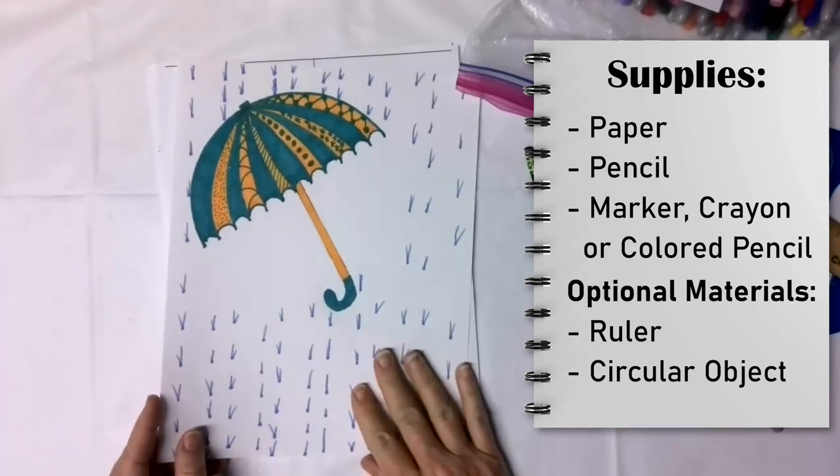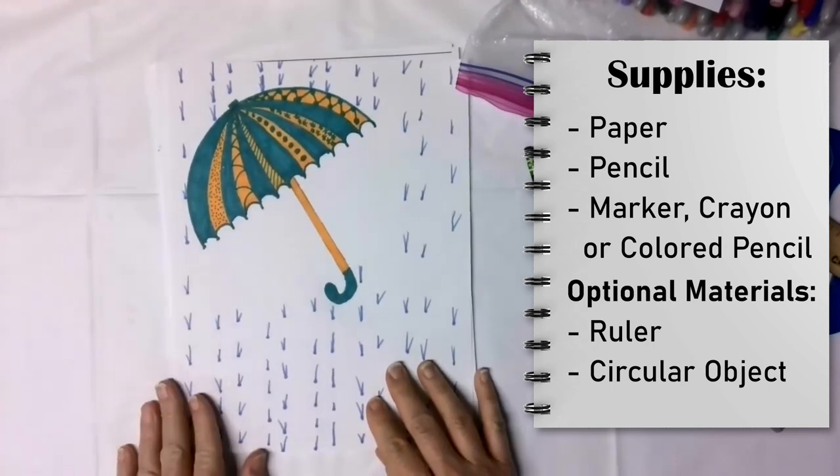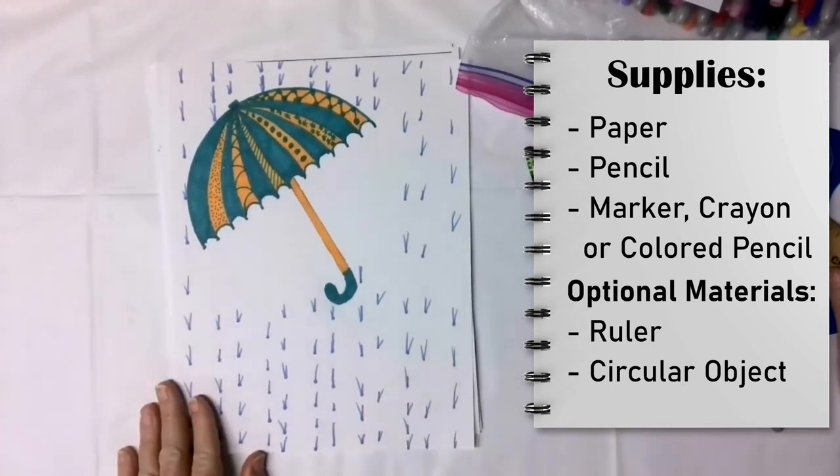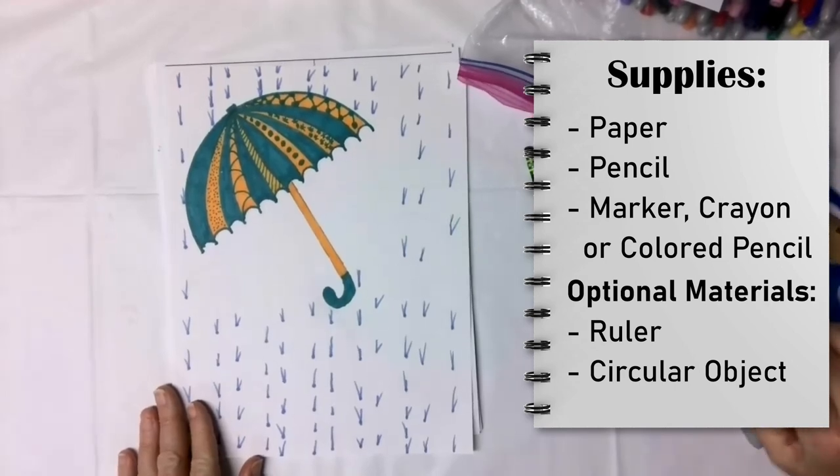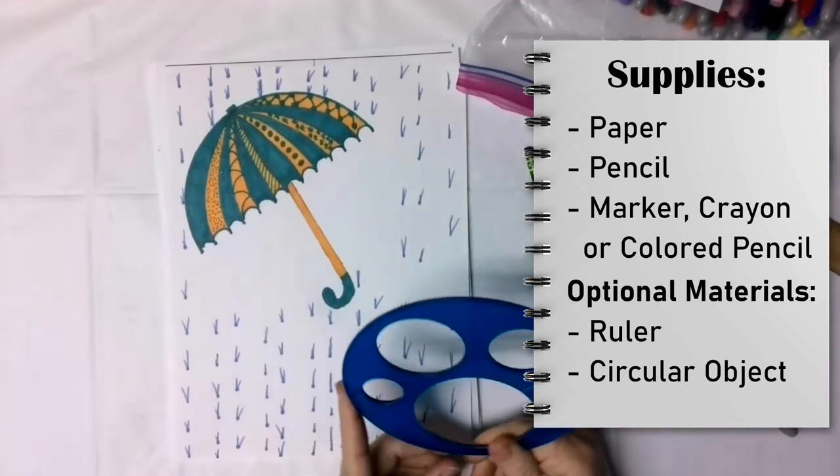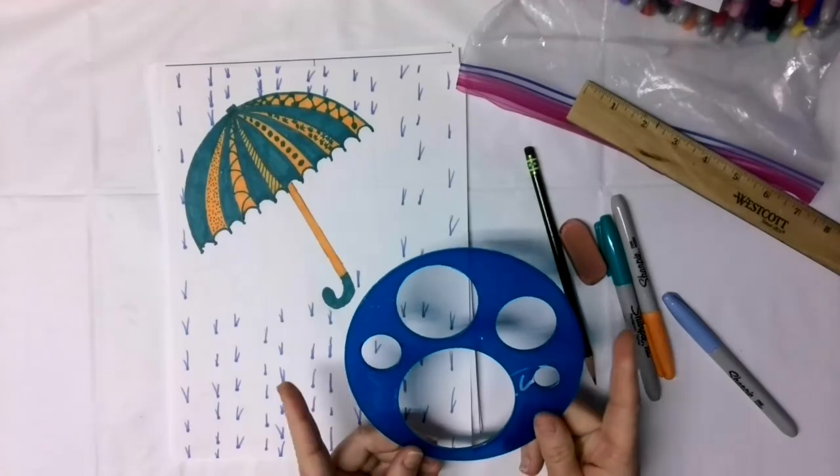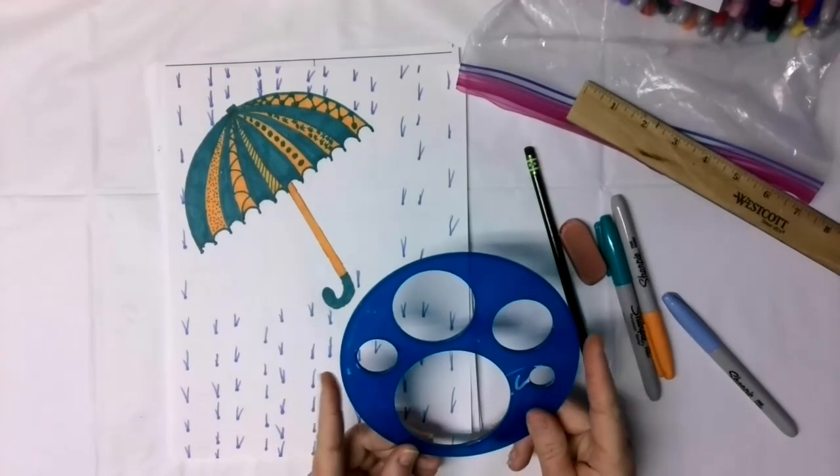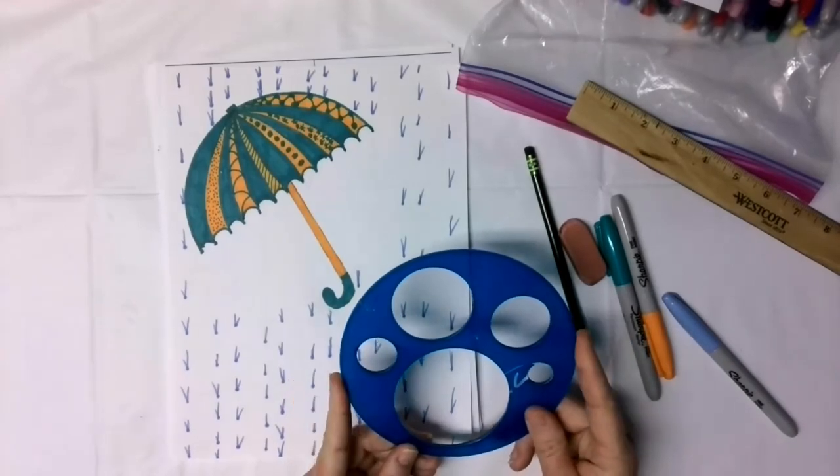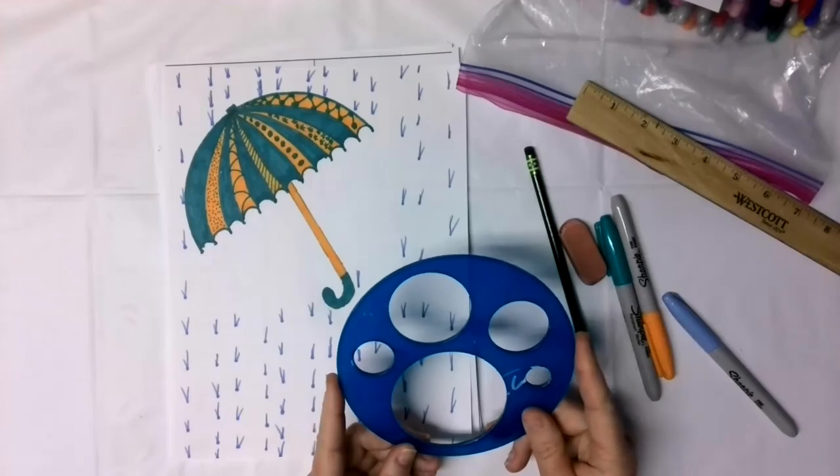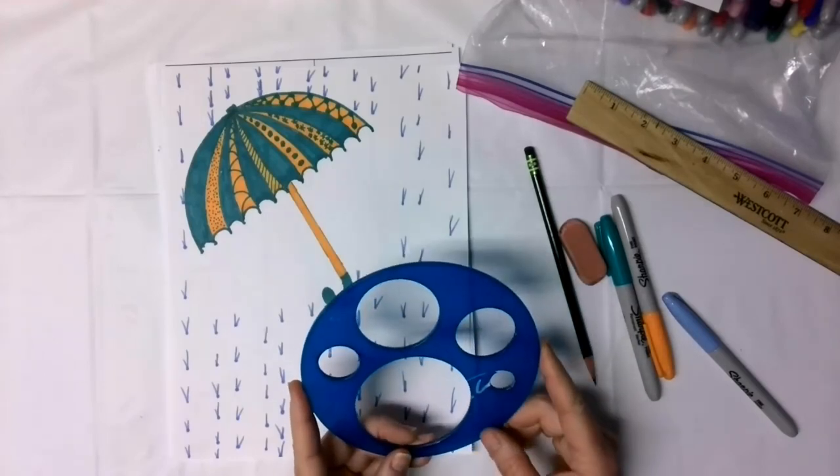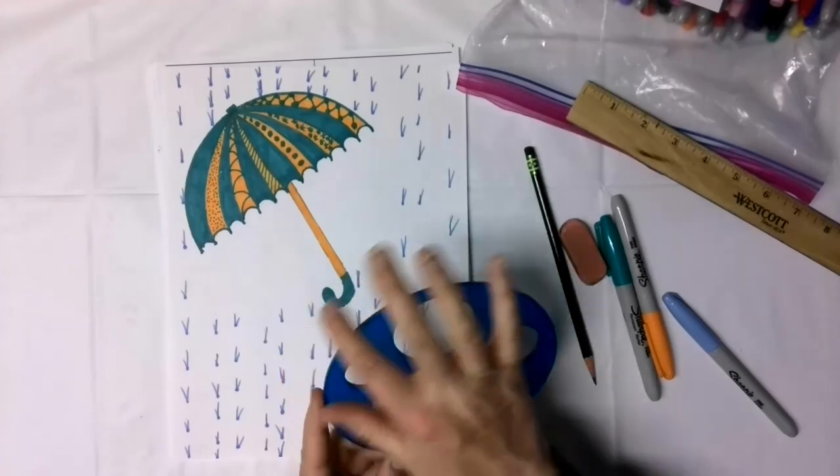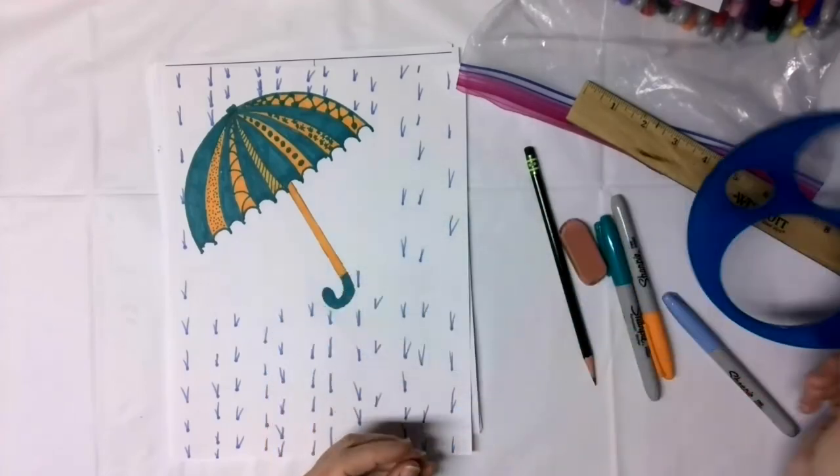The optional things that you will need or can use is a ruler and a circle. You can find anything in your house that has a circular pattern. Upside down cups or saucers, little plates, lids to different things, tape rolls. There's a lot of different things you can find in your house.